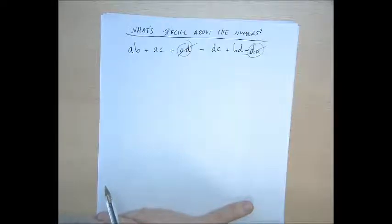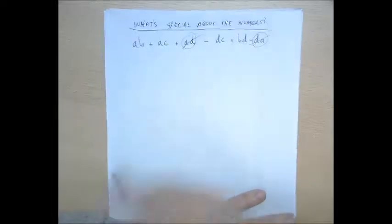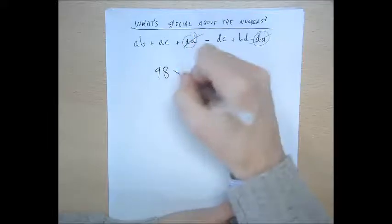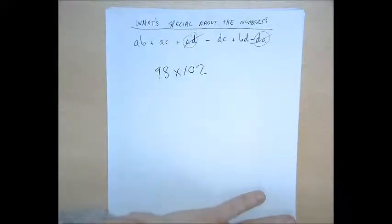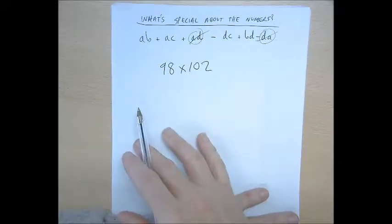The first question of the senior maths challenge this year, there was a very simple question which you can do the slow way if you want. But when you're early on in the maths challenge, you want to be saving time so you can do the harder questions later. What's special about that? They're close to 100. They're not just close to 100. One is the same amount below 100 as above 100. Okay? And that'll get you started. Okay? I'm not saying that's the solution. But that'll get you started.